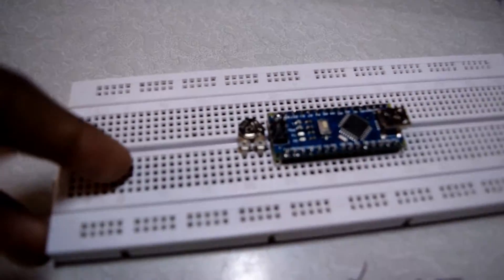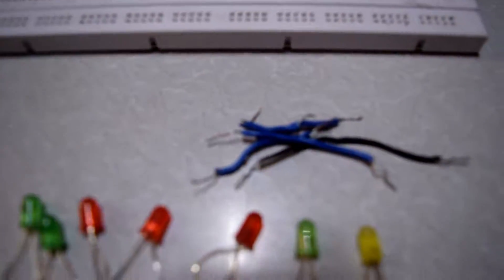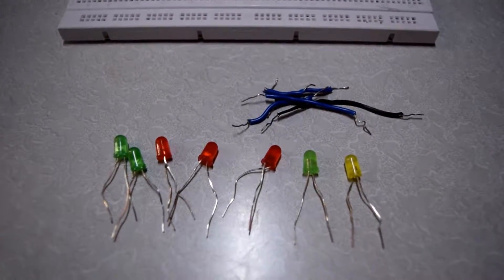A 100K potentiometer, also called a variable resistor. LEDs - the number can be from 1 to 13.